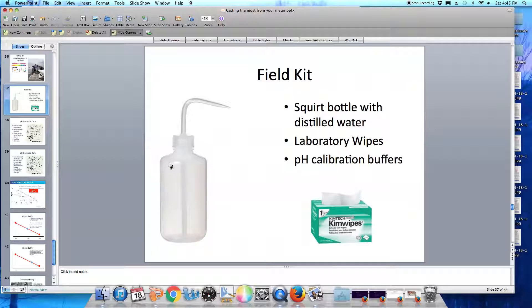When you are going out in the field to do pH measurements, make sure that you bring a few extra items with you, such as a squirt bottle with some distilled water in it. You're going to need this for cleaning your electrode. You're going to need some lint-free laboratory wipes, such as kimwipes, and you are certainly going to need your pH calibration buffers.